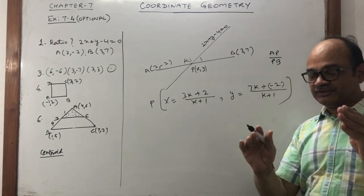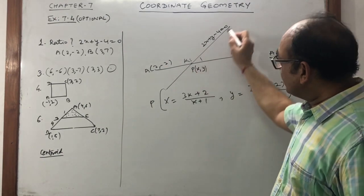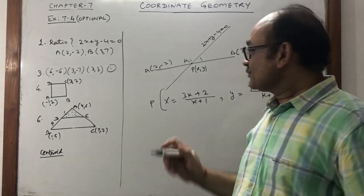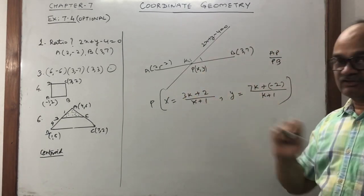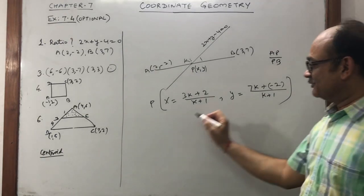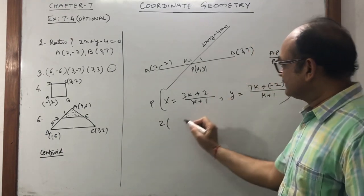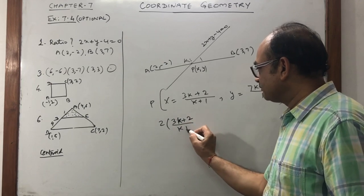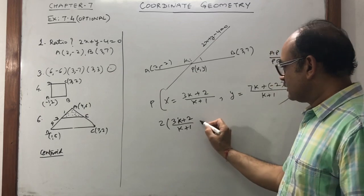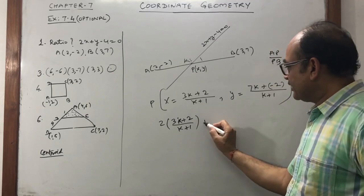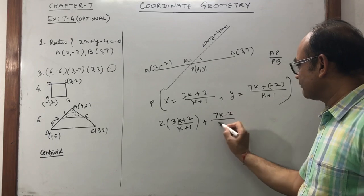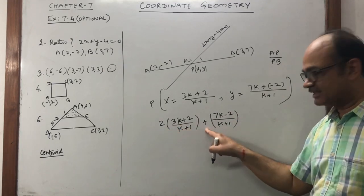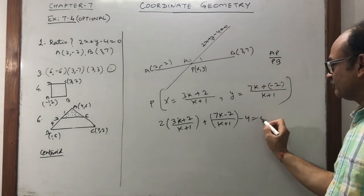Now when we know P, P is also a junction of these two lines — it means P will satisfy this line also, same as in your class 9. So now 2 times x, where x equals (3k plus 2) upon (k plus 1), plus y which is (7k minus 2) divided by (k plus 1). So 2x plus y minus 4 equals 0.